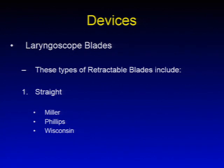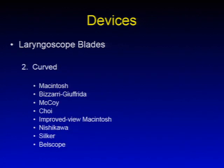Laryngoscope blades are known as retractable blades. They include straight blades such as the Miller, Phillips, or Wisconsin. Curved blades include the Macintosh, Bizarri-Giuffrida, McCoy, Choi, Improved View Macintosh, Nishikawa, Siker, or Belscope.